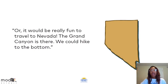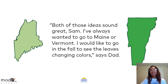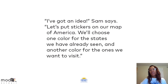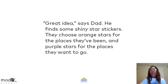Or it would be really fun to travel to Nevada. The Grand Canyon is there. We could hike to the bottom. Both of those ideas sound great, Sam. I've always wanted to go to Maine or Vermont. I would like to go in the fall to see the leaves change colors, says dad. I've got an idea, Sam says. Let's put stickers on our map of America. We'll choose one color for the states we have already seen and another color for the ones we want to visit. Great idea, says dad. He finds some shiny star stickers. They choose orange stars for the places they've been and purple stars for the places they want to go.